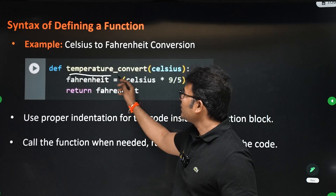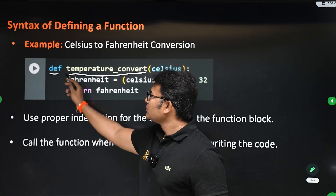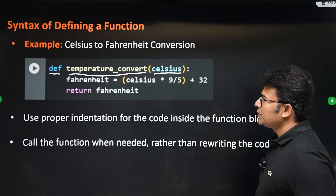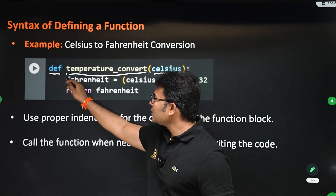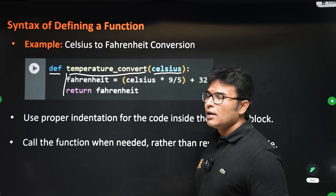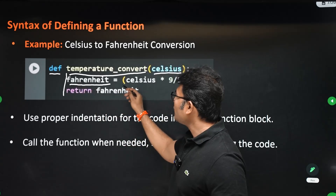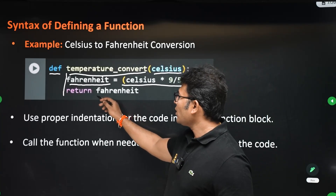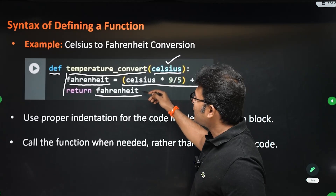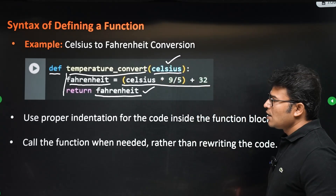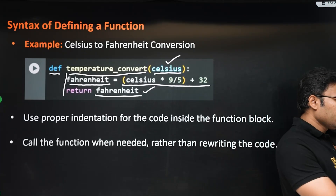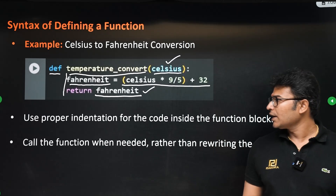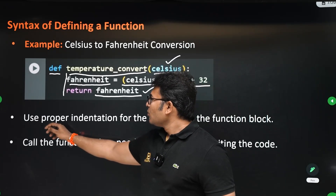Let's take an example of converting Celsius to Fahrenheit. We define a function called `temperature_convert` using `def`, passing a parameter `celsius`. Inside the function, with four spaces of indentation, we calculate the Fahrenheit value using the formula, and finally return the Fahrenheit value. The purpose of this function is to take a Celsius value and convert it to Fahrenheit. Proper indentation is required.